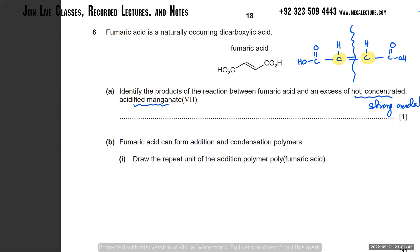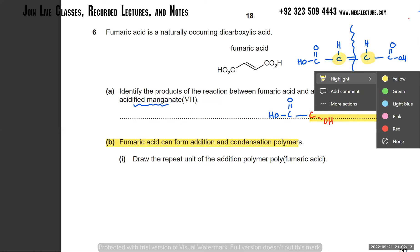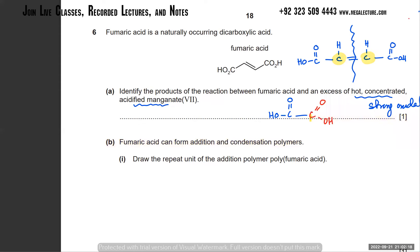Our focus is on these two carbon atoms - what's going to happen to them? This carbon has only one carbon chain attached to it, so it will turn into a carboxylic acid. This carbon also has one carbon chain attached to it, so it will also turn into a carboxylic acid - it's going to be C=O and OH. So this carbon turns into a carboxylic acid and the other one is exactly the same. The product is ethane-dioic acid - two carbon atoms and two carboxylic acid groups.